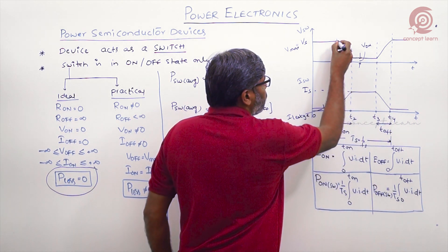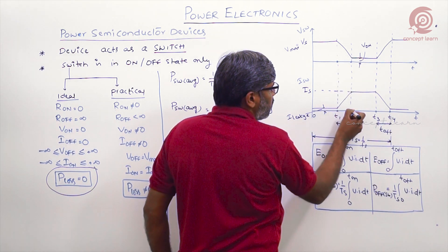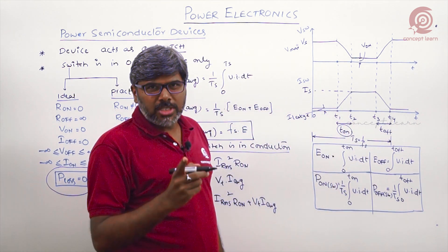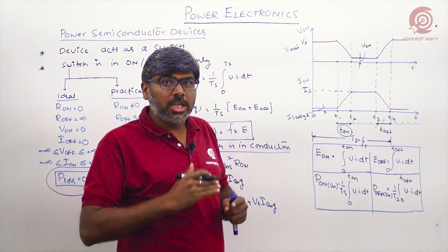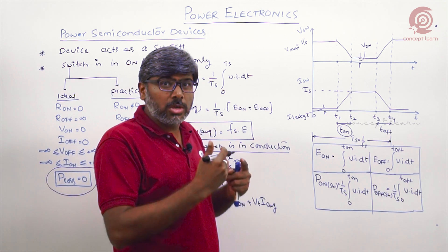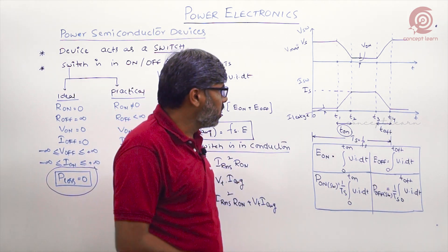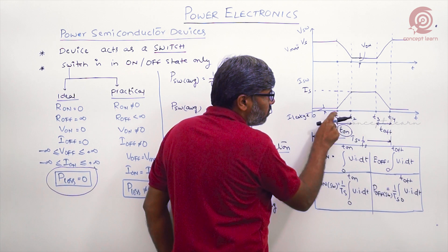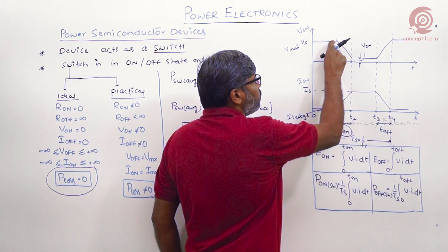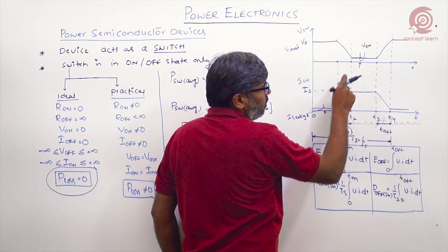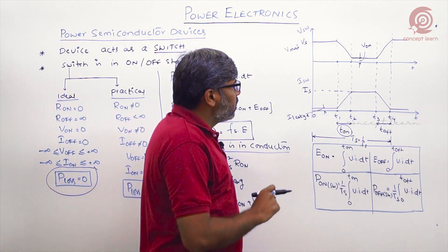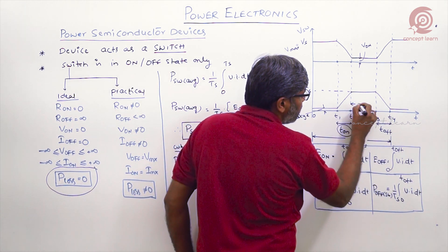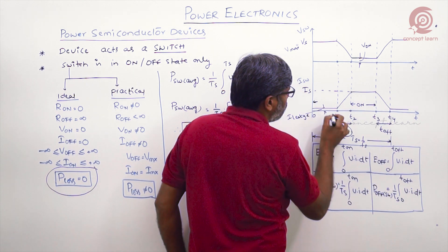Current reaches its maximum at t2, and voltage falls from V_max to the on-state voltage drop during the t1-to-t2 period. This period is called the turn-on time of the switch. In the ideal case the turn-on time is zero, but in practice it takes a finite time for current to rise from the leakage value to the final value and for voltage to fall from maximum to minimum, so some energy is lost. The period from t2 to t3 is the on-state (conduction) period; zero to t1 is the off state, and t1 to t2 is the turn-on process.